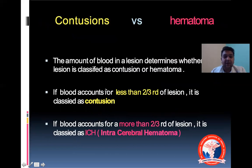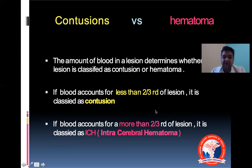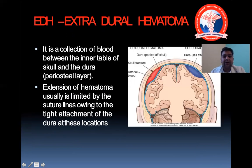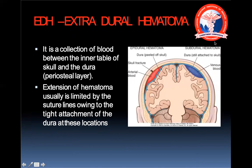The amount of blood in the lesion determines whether it is classified as a contusion or hematoma. If blood accounts for less than two-thirds of the lesion, it is a contusion. If blood amounts to more than two-thirds, it is an intracerebral hematoma. Hematomas require surgical intervention — a drainage procedure — because they produce a mass effect and volume effect.